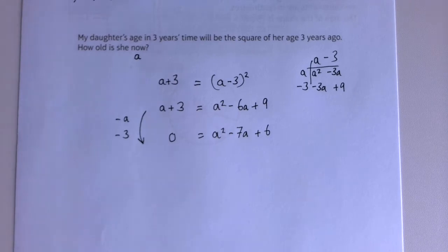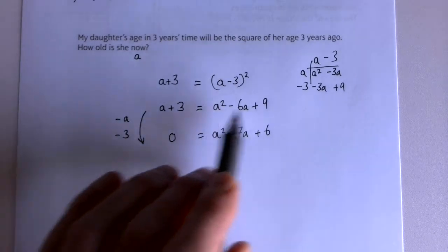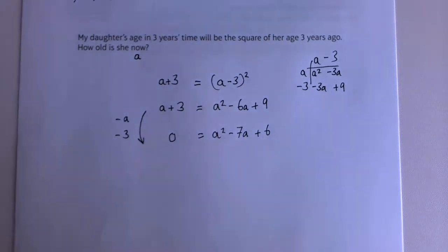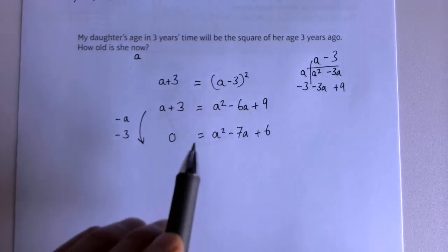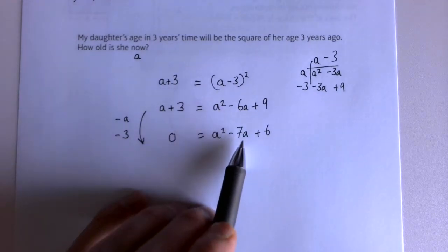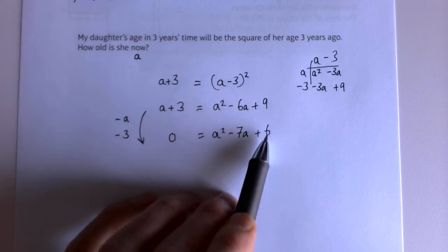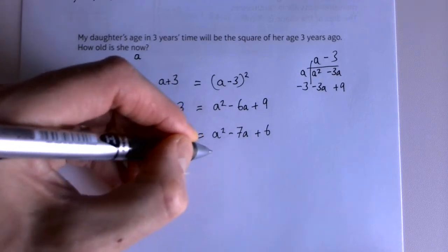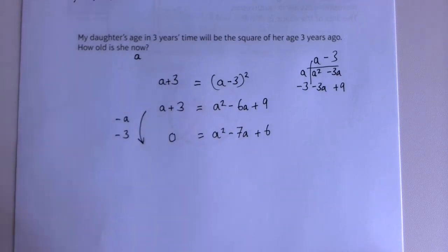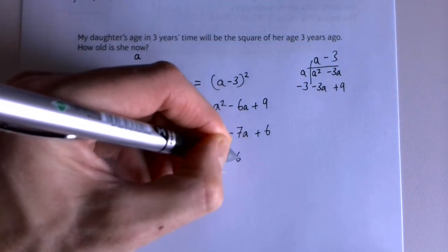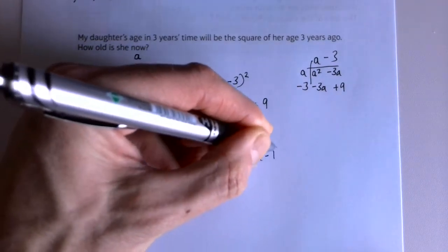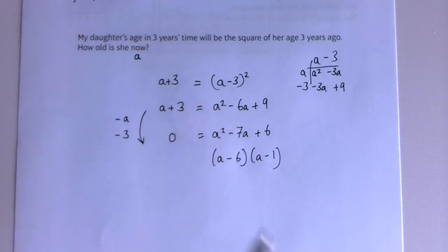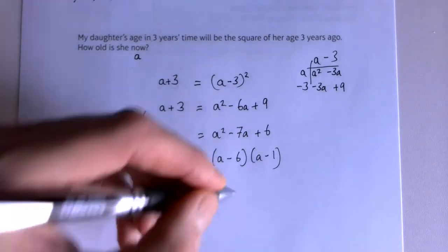Because it's a quadratic equation I want zero on one side, so I'm going to take away an 'a' and take away three from both sides. I took away an 'a' so I already had minus 6a, making it minus 7a, and I took away three so the nine becomes six. I'm going to solve this now - you could use the formula where a = 1, b = -7, c = 6, but actually this one factorises quite nicely, giving minus six times minus one for plus six, and minus 6a minus a. So my two solutions are...